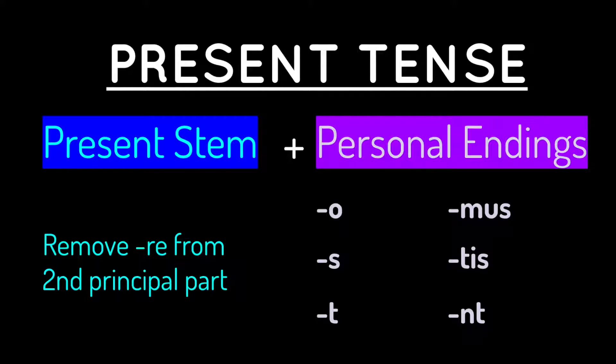To form the present tense, you're going to use the present stem, which is created by removing the -RE from the second principal part. Then the personal endings for the present tense are: o, s, t, mus, tis, nt.